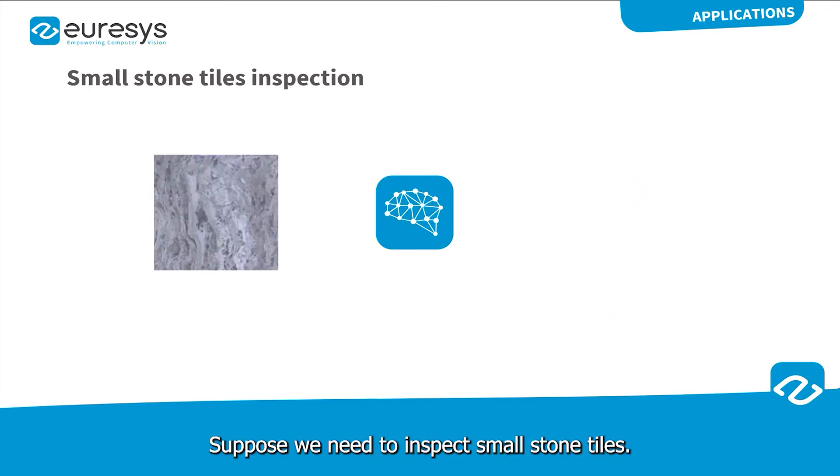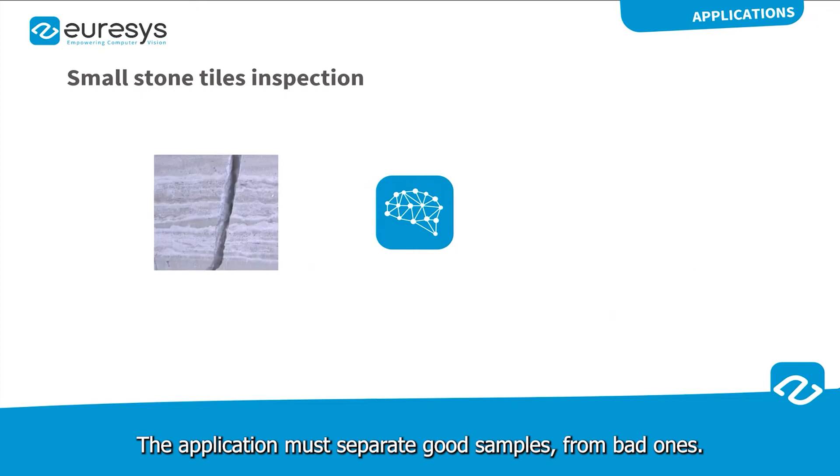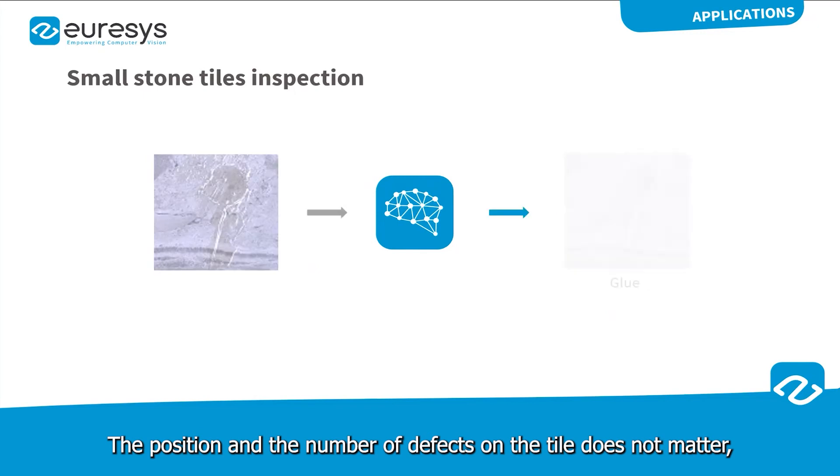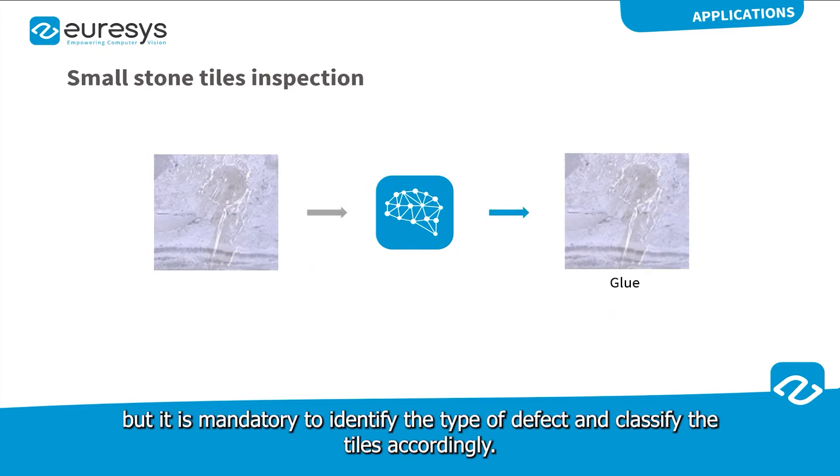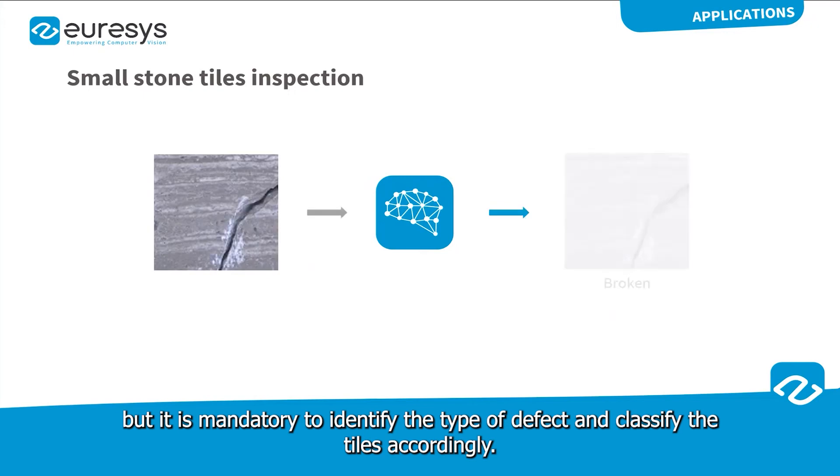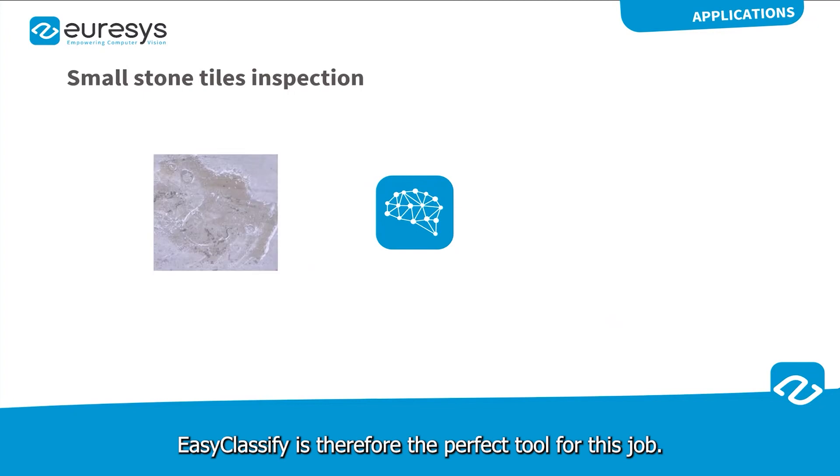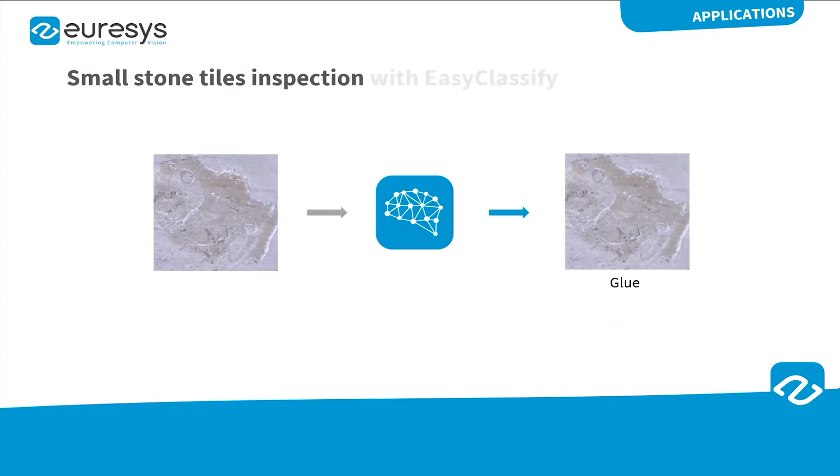For each of them, we need to inspect small stone tiles. The application must separate the good samples from the bad ones. The position and the number of defects on the tile does not really matter, but it is mandatory to identify the type of defect and classify the tiles accordingly. EasyClassify is therefore the perfect tool for this job.